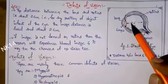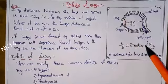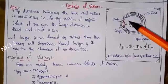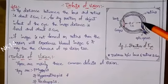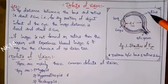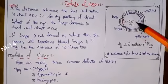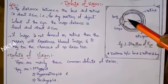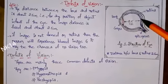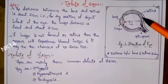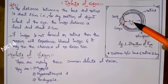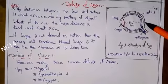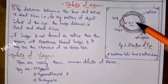I will explain this with a diagram, as I already covered in the structure of the eye. The lens and retina play a major role. The distance between them is 2.5 centimeters, and whatever image forms after the lens should form exactly on the retina. If the image forms in front of the retina — less than 2.5 cm — or after the retina — more than 2.5 cm — then in both cases we get defects.